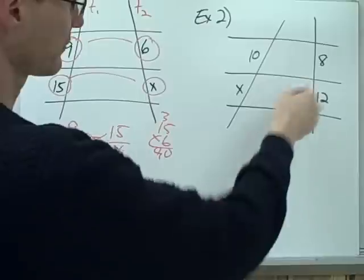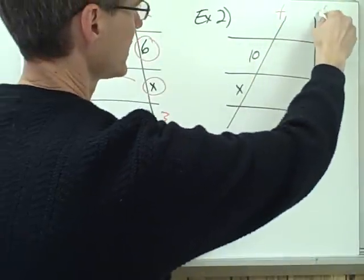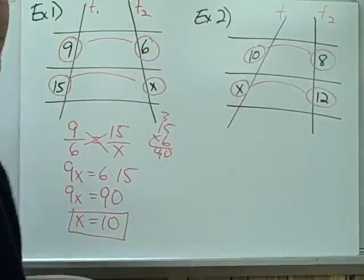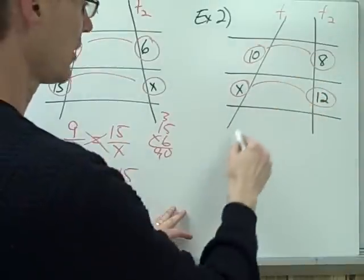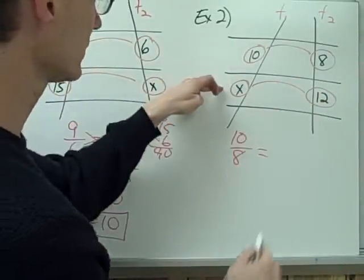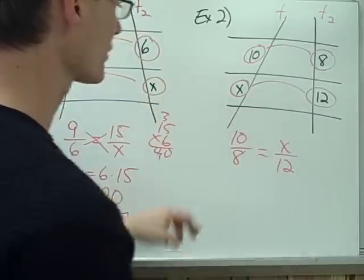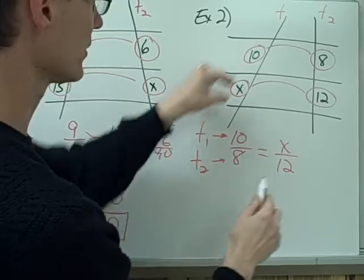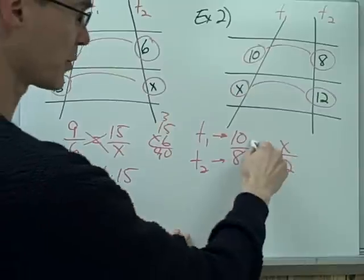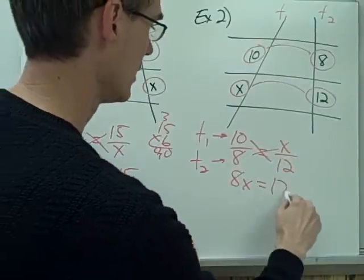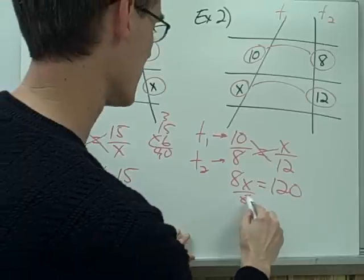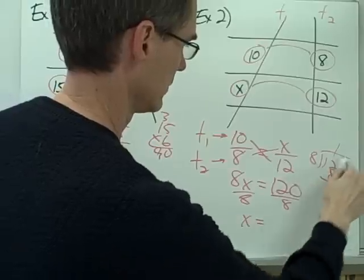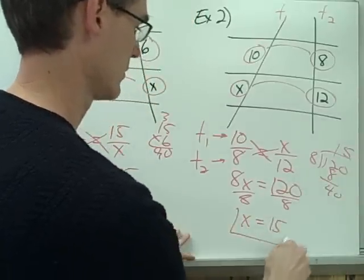Example number 2: again I have three parallel lines and two transversals, T1 and T2. Here are my corresponding parts. I set up a proportion: 10 over 8 equals x over 12. Notice 10 and x are T1 parts, and 8 and 12 are T2 parts. Cross-multiplying gives 8x equals 120; dividing both sides by 8 gives x equals 15.